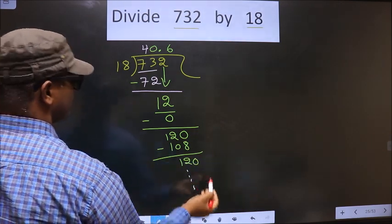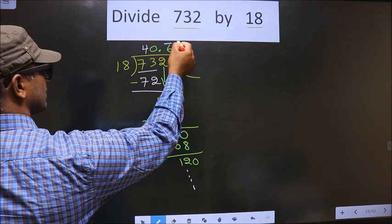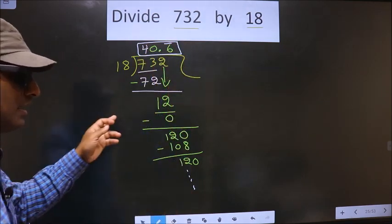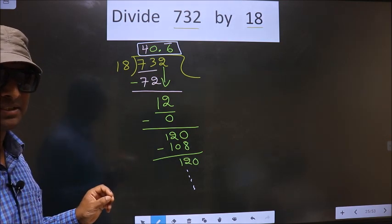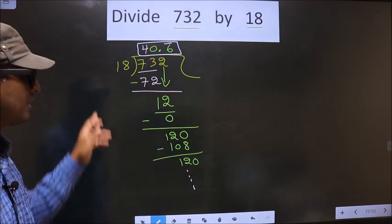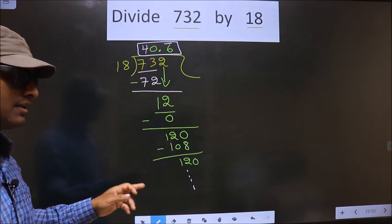And it goes on. We get a bar on this. This is our quotient. Did you understand where the mistake happens? You should not do that mistake. Am I clear?